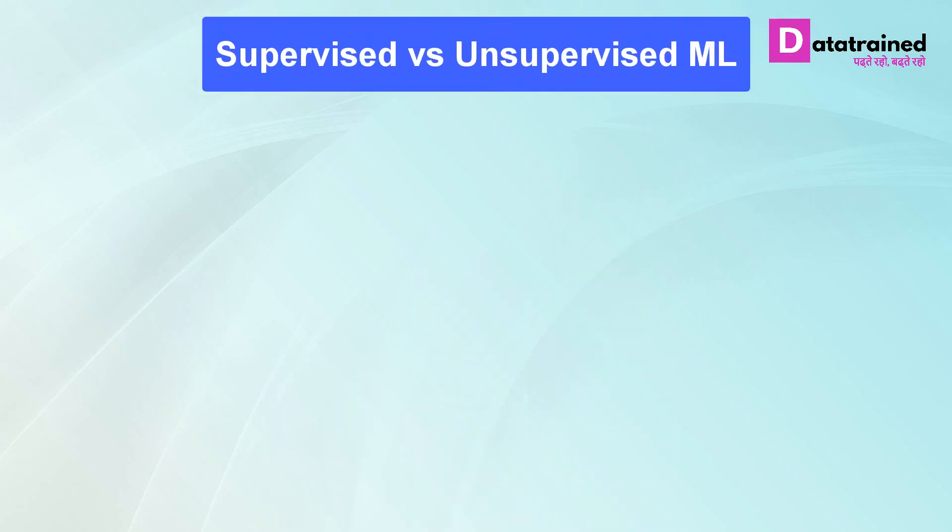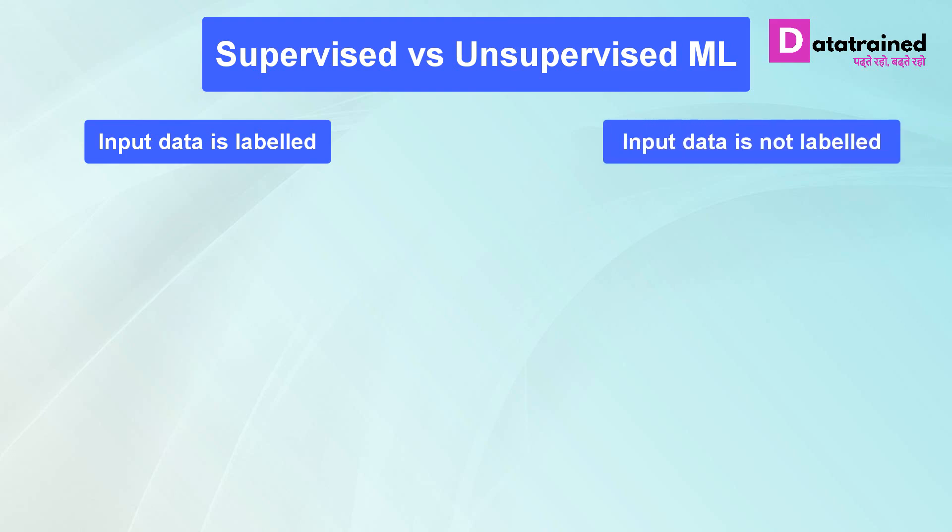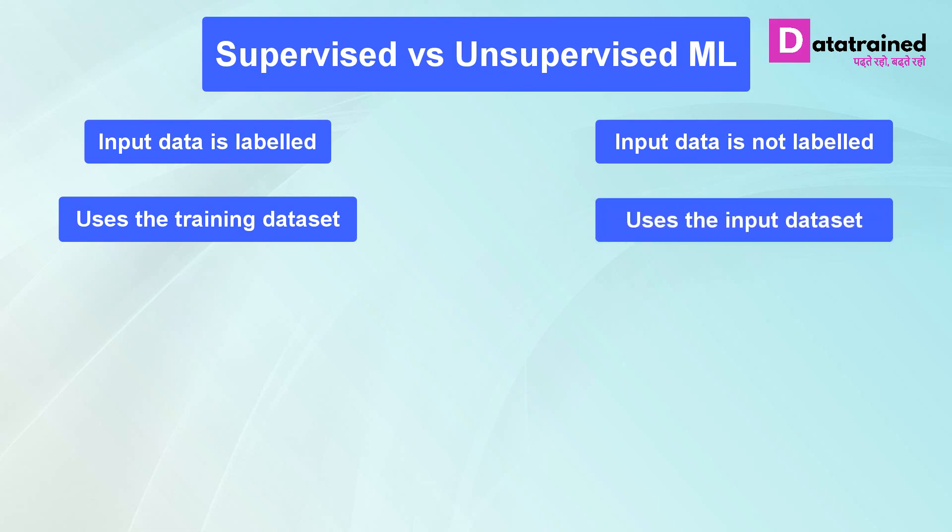Now let's come to the difference between supervised versus unsupervised machine learning. Supervised machine learning input data is labeled. In unsupervised machine learning, input data is not labeled. Supervised ML uses the training data set. Unsupervised ML uses the input data set.